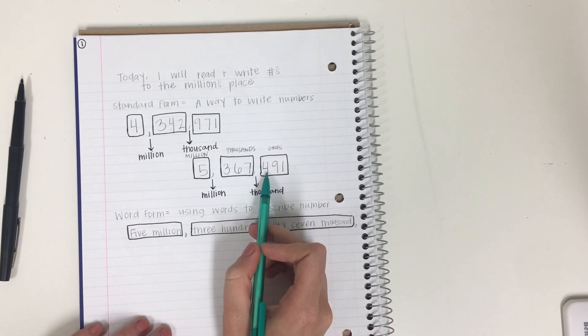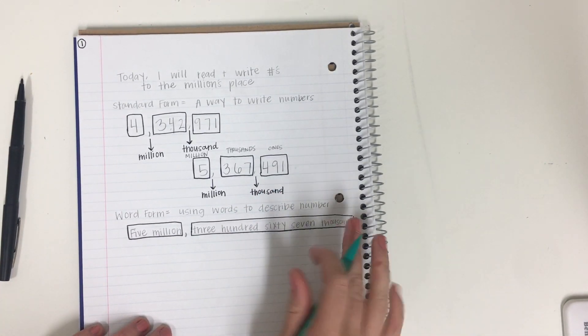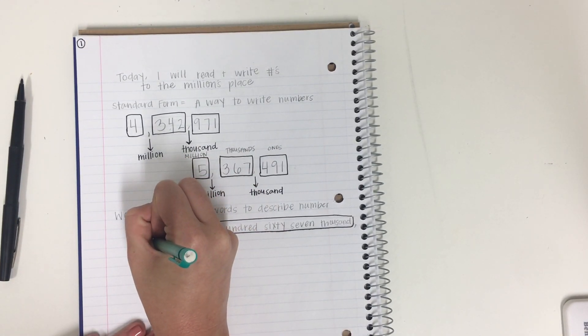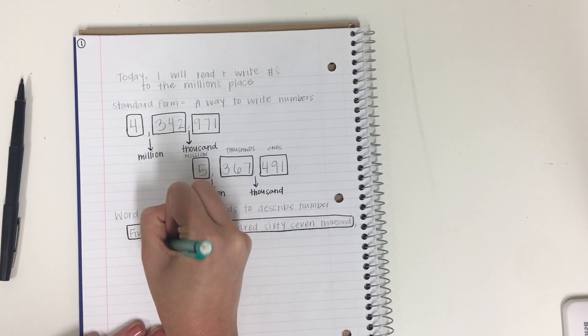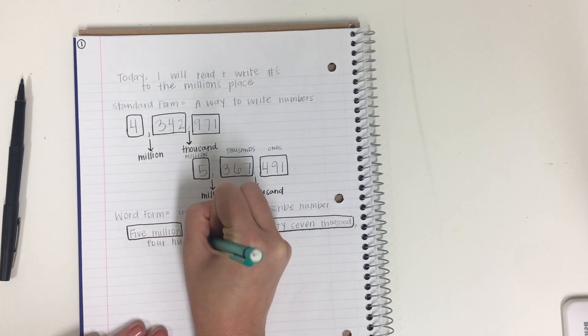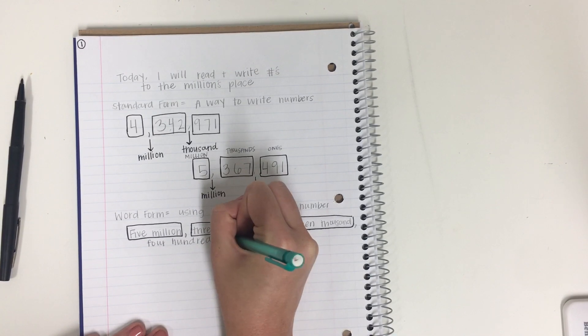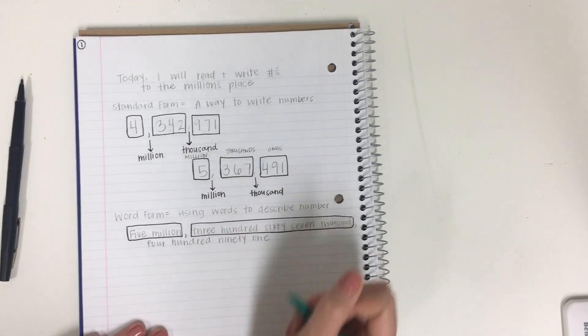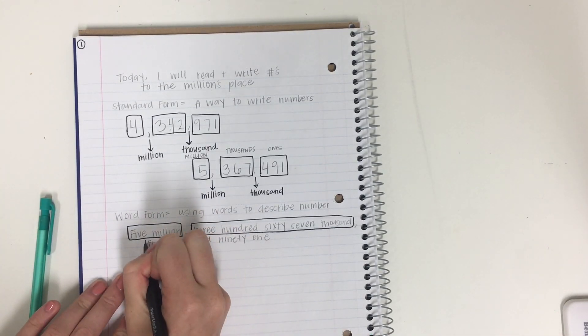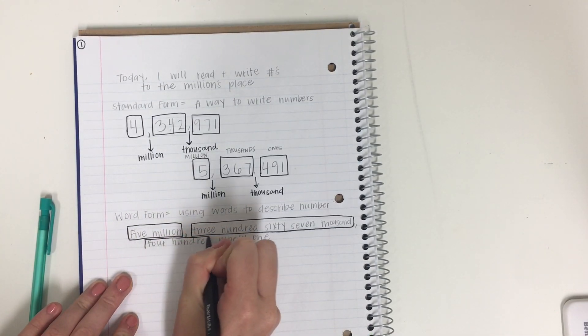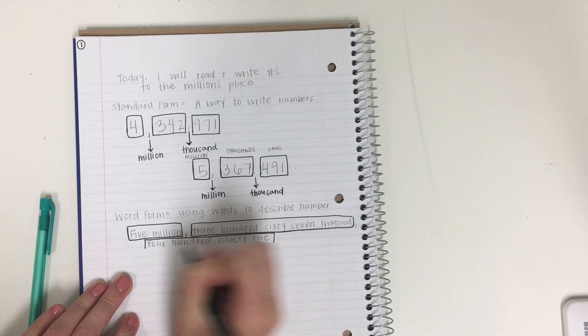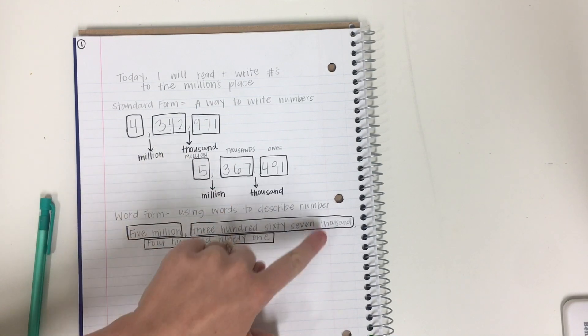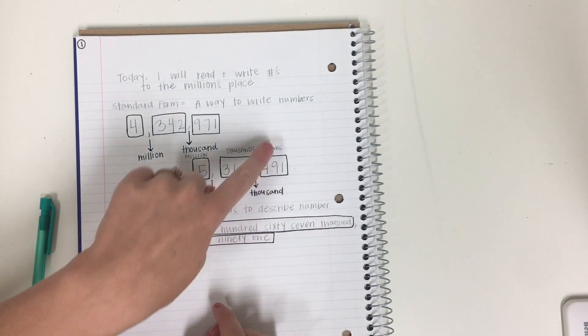And then our last one is four hundred ninety-one. So I'm just going to bring it down here. And I'm going to write. Four hundred ninety one. And then I'm going to put my box. Because that's my final place value period. And see how this final word matches the period you're in? So that's how we know. Okay?